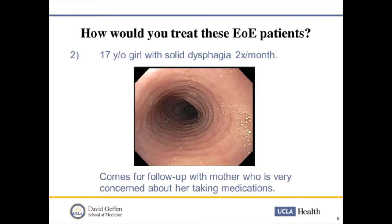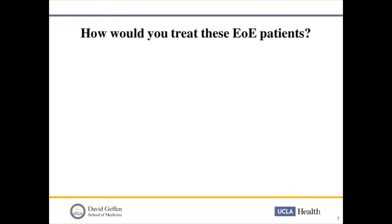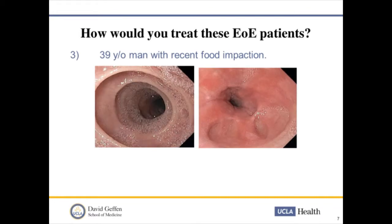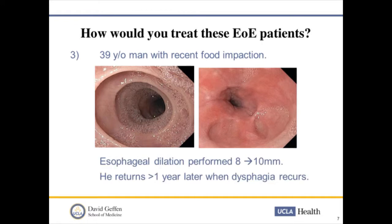The mother is concerned about medications either short or long term. The final case is a 39-year-old man referred for solid food dysphagia. In the first picture on the left, you almost think you're in the trachea. Then you get down further and you see a tight stricture — dilated from 8 millimeters to 10 millimeters. He was told to come back to discuss medication therapy but wasn't seen for over a year, after which he had recurrent symptoms. Those are three fairly classic patients.